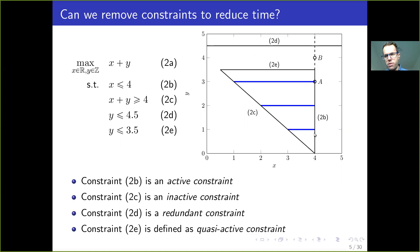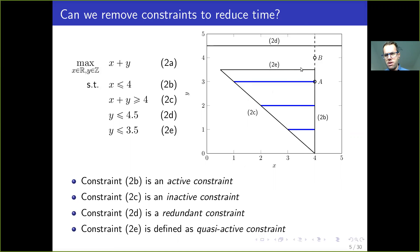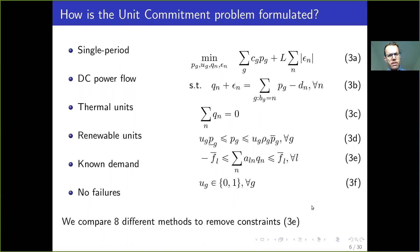We are going to discuss the different constraint types. Constraint 2b is binding at the optimal — we denote this as an active constraint. Constraint 2d is also inactive, but it's more than that: it's redundant, because if we remove it the feasible region remains exactly the same. Finally, constraint 2e is a very special type: it's not binding at the optimal, but if we remove it, the optimal shifts from A to B. We call these quasi-active constraints.